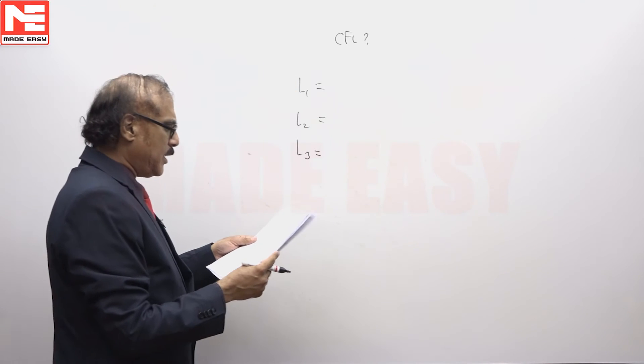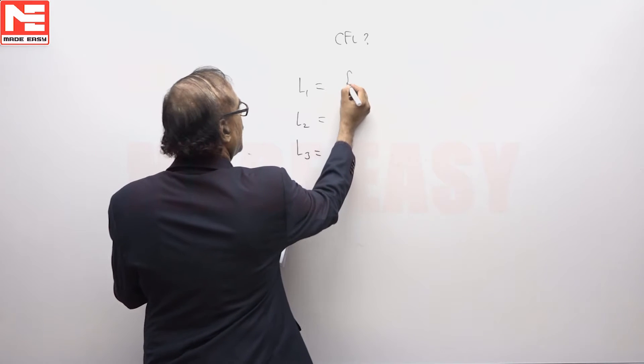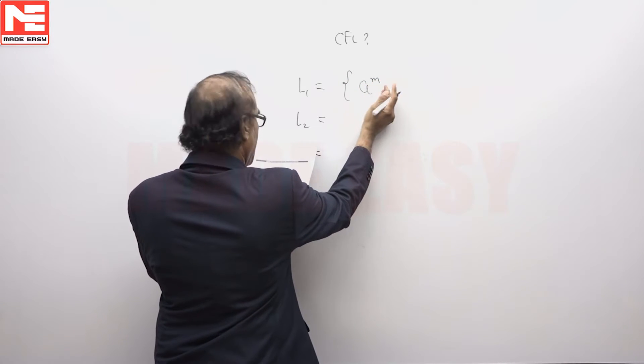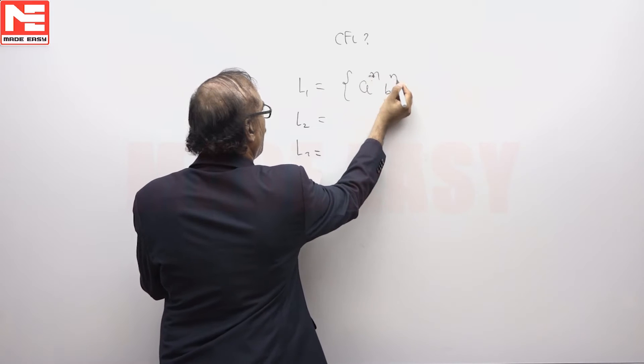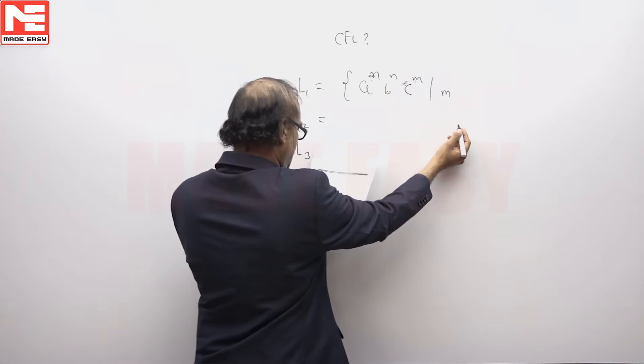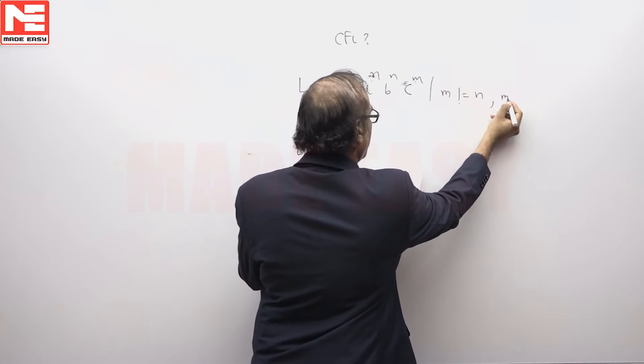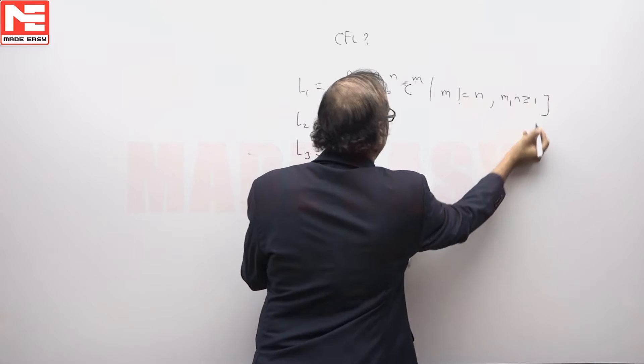In this question we have 3 languages L1, L2 and L3. L1 here is given a^n b^n, we have one comparison and then we have one more comparison outside, m not equal to n, both m and n are infinite.